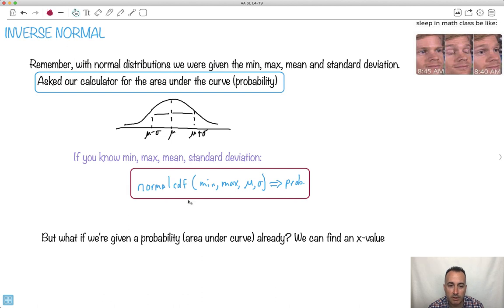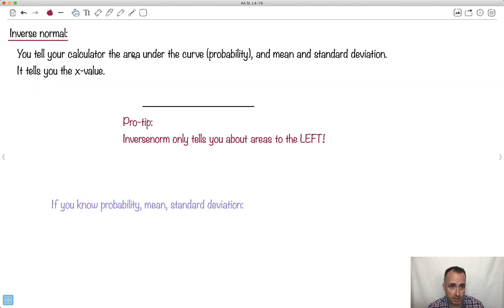But what if we're given a probability? What if we start here and we're looking for something else? For example, we're looking for an x value, some sort of maximum. This is what we do for inverse normal. So you tell your calculator the area under the curve. We know the mean and we know the standard deviation. We know mean plus sigma, we know mean minus sigma.